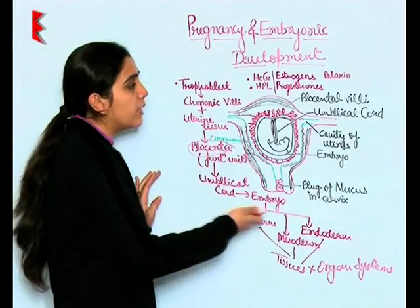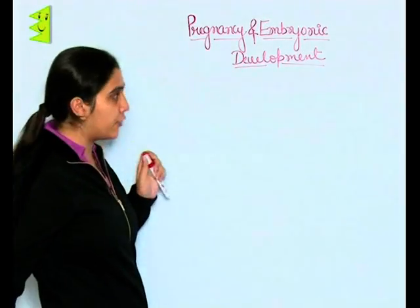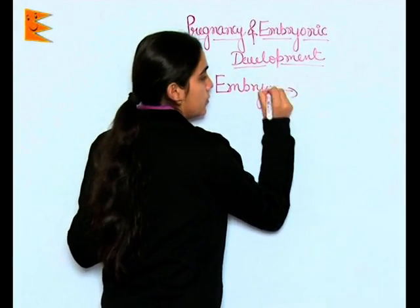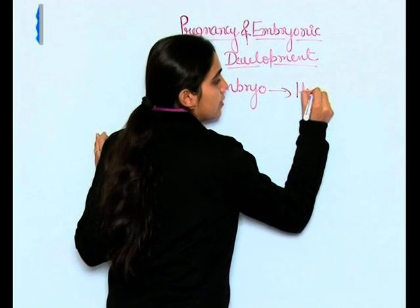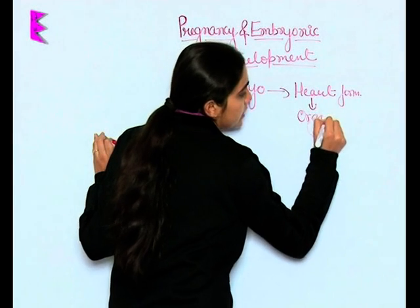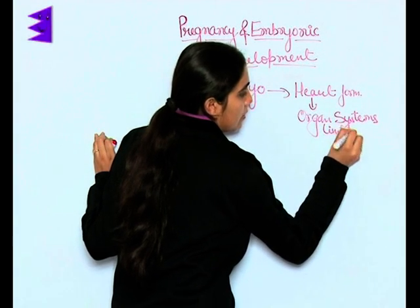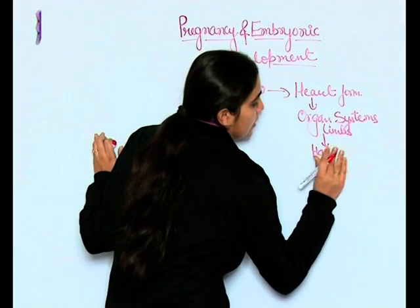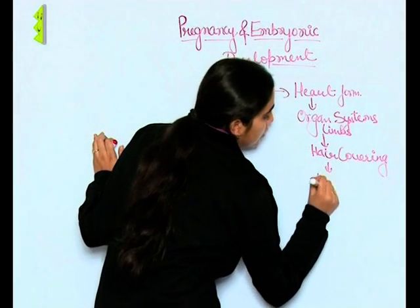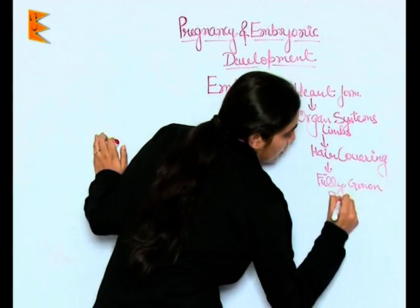This is how the embryo develops. Let us study it in different phases. First is the heart formation, then organ systems and limbs, then hair covering, and then a fully grown baby.